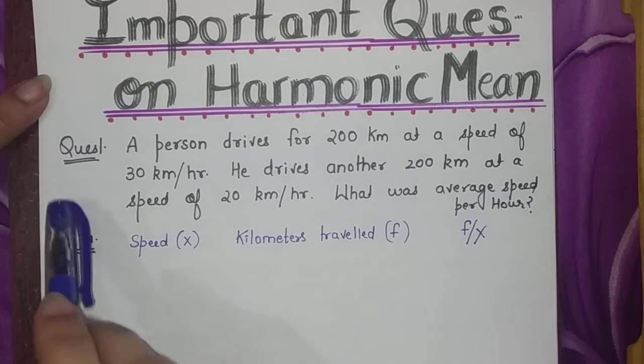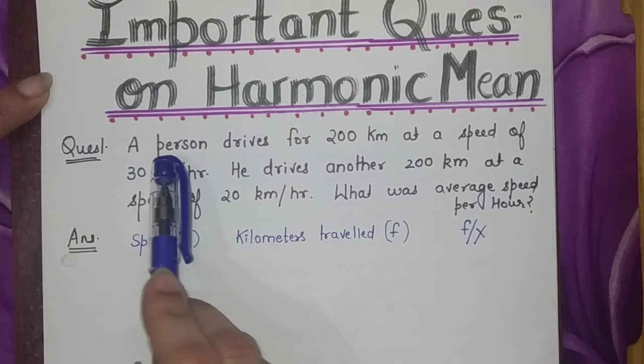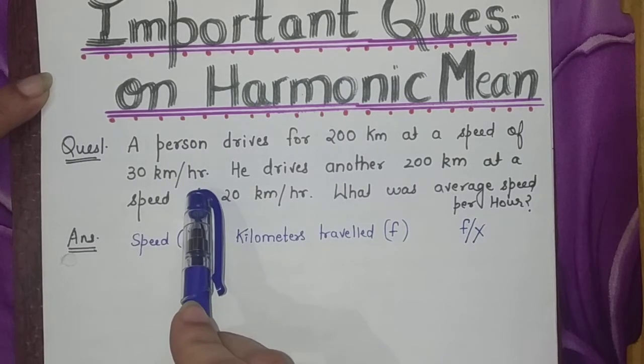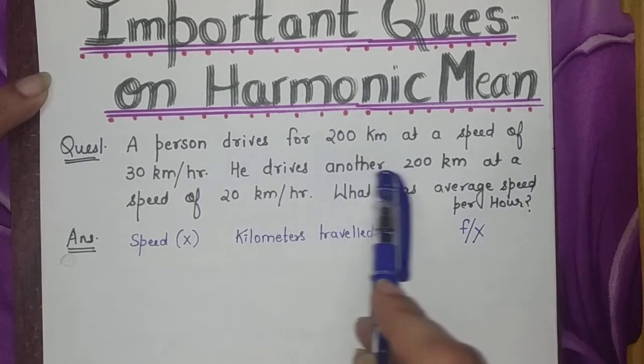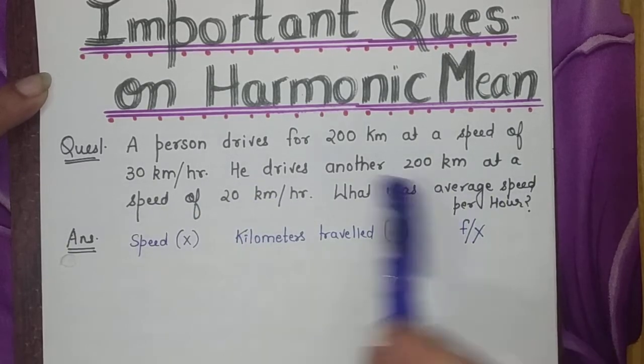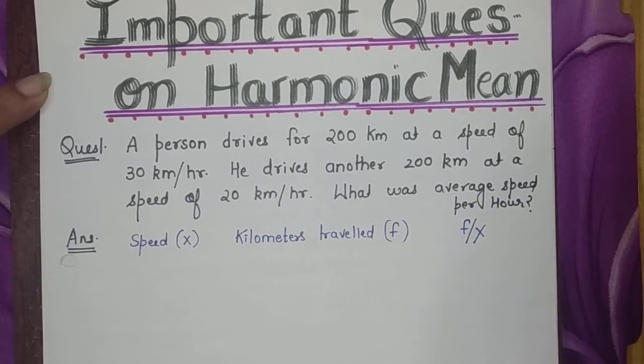Let's begin with the very first question. A person drives for 200 kilometers at a speed of 30 kilometers per hour. He drives another 200 kilometers at a speed of 20 kilometers per hour. What was the average speed per hour?